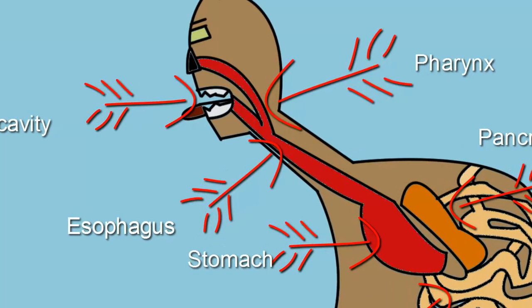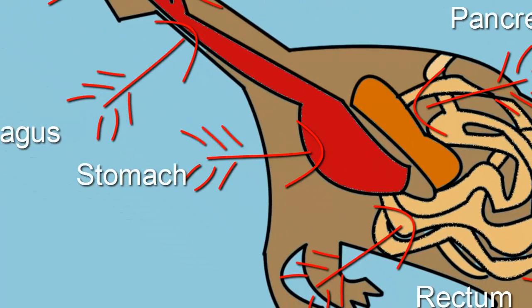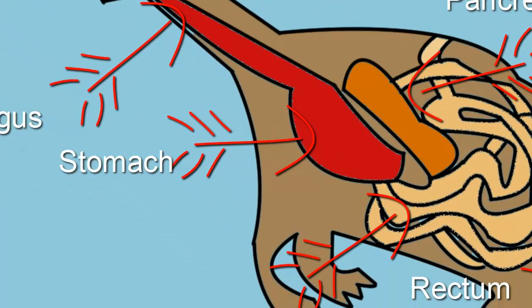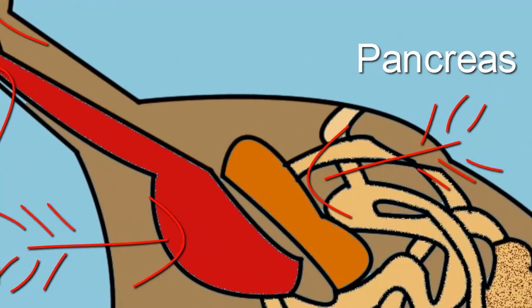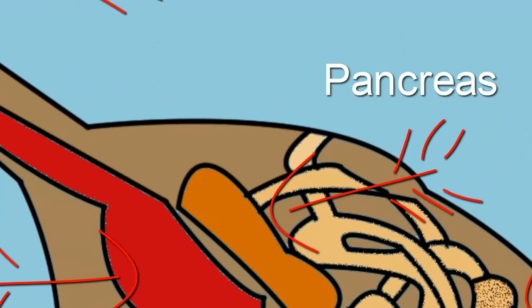Next, the esophagus. It is a tube that connects the oral cavity to the stomach. The stomach digests the food, not the pancreas.